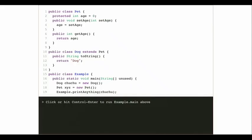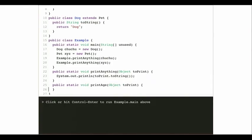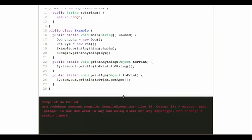Let's see what happens in my printAnything method. Let's try a new method: public static void printAge, and again let's take an Object to print. Let's call system.out.println on to.getAge(). I'm following the pattern I followed before. What's going to happen when I run this? I have a compiler error on line 26 — this line where I try to print the age of this object by calling getAge. Why can't I do this? What is wrong with this piece of code?